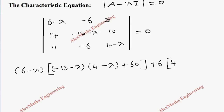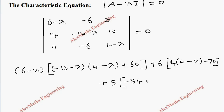So 14 into 4 minus lambda minus 70. In the last element, 5 into 14 into minus 6 gives minus 84. Then 2 times 6 times 1 gives 6, and 7 times 8 gives 56. We then have to subtract and 7 multiplied by the remaining two elements, all equal to zero.